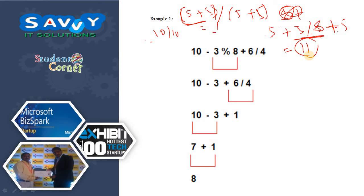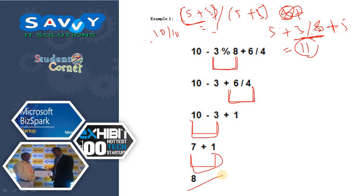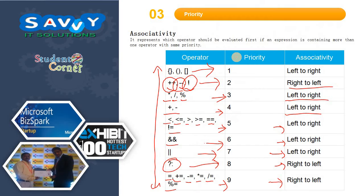Now let us take an example: 10 - 3 mod 8 + 6/4. Initially, we perform the modulo first, followed by division, followed by subtraction, followed by addition. You can evaluate modulo and division together, then handle addition and subtraction — that is also fine. But the procedure is very important: first evaluate division or modulo according to the precedence of the operators.